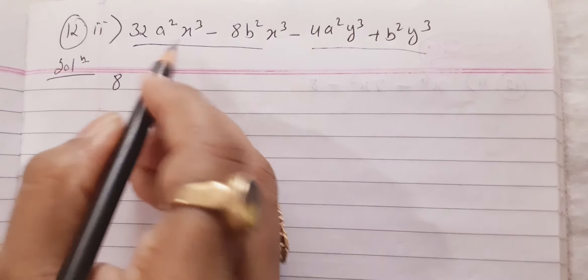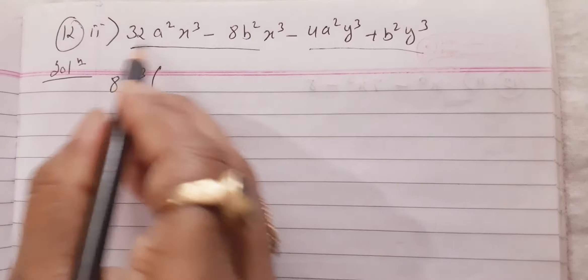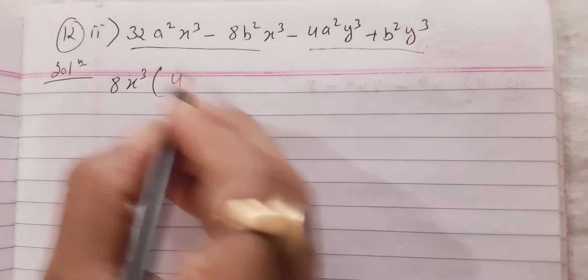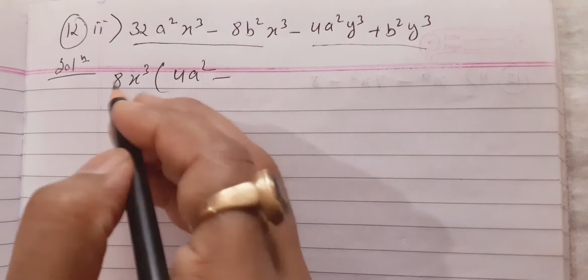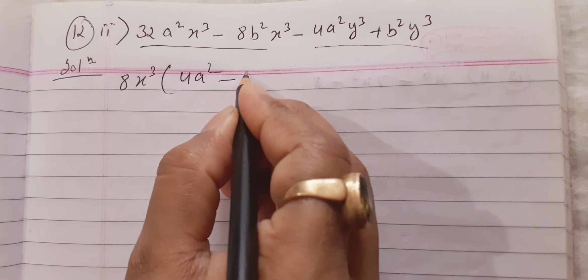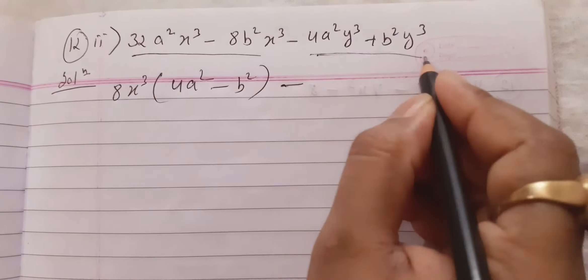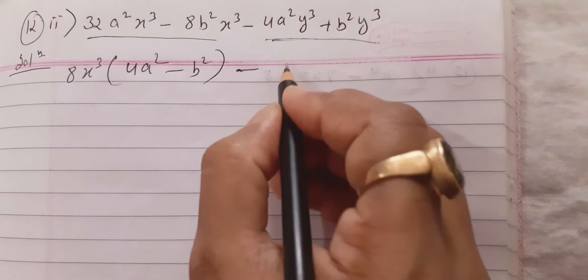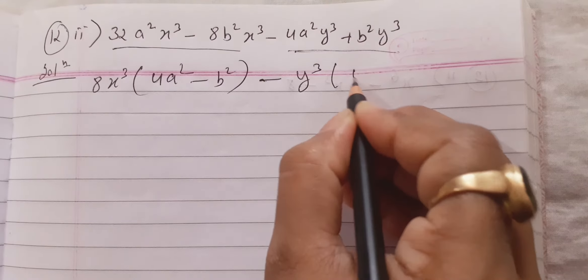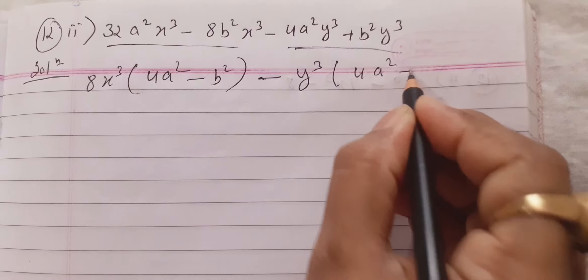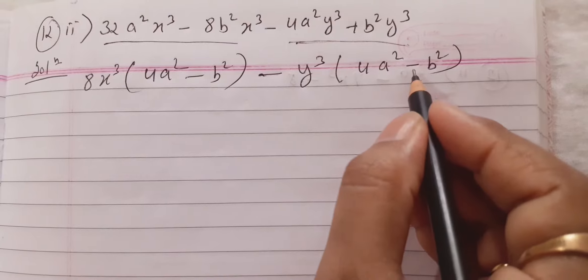From the first two terms, I can see 8 is there and x³ is also there, so 8x³ will be common. After taking 8x³ out, for 32a²x³ the remaining is 4a², and here b² only remains. From the second group, y³ may be taken as common factor, and what remains is 4a² minus b², because minus is also taken as common — that's why the plus changes to minus.